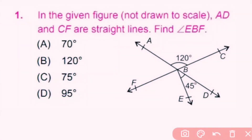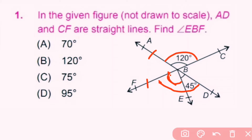Let's start with question number 1. In the given figure, AD and CF are straight lines. Find angle EBF. Here we have to find angle EBF. According to the question, AD and CF are straight lines that intersect at point B, and angle ABC is 120 degrees.